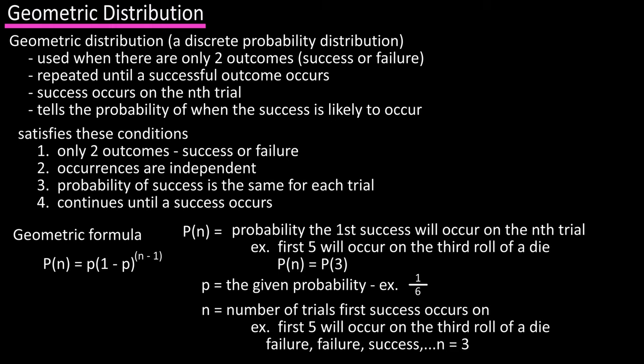So roll one is a failure, roll two is a failure, and roll three is a success. So n equals three, because this is the number of trials we're looking for the first success on.